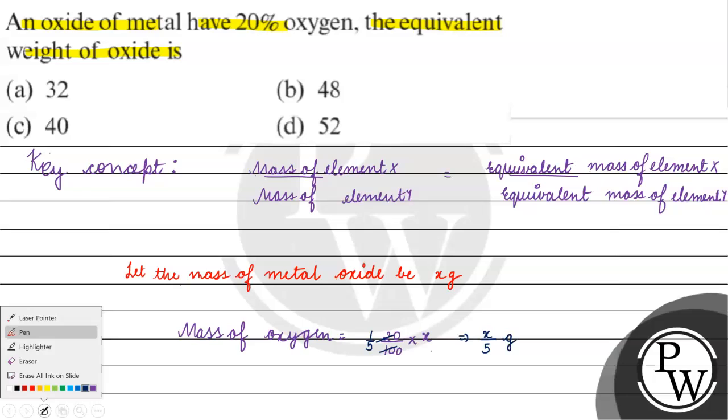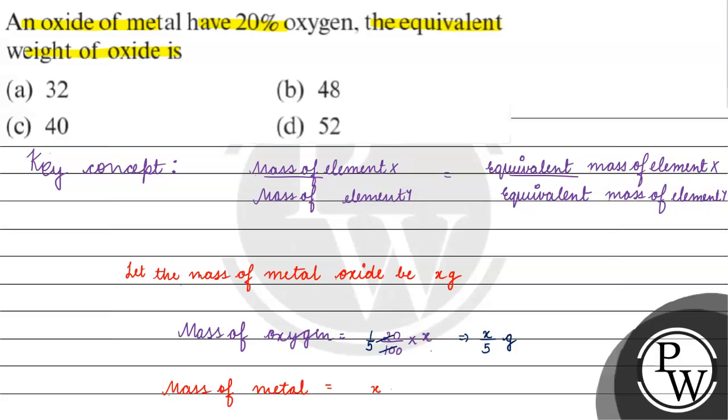Mass of oxygen, and mass of metal - we know mass of metal oxide, we know mass of oxygen. For mass of metal, we will subtract the mass of oxygen. What will happen? We have 4X by 5 gram.